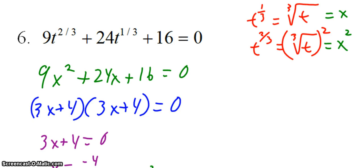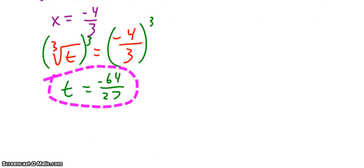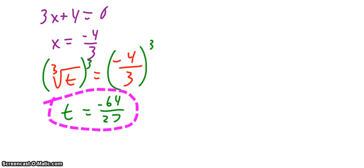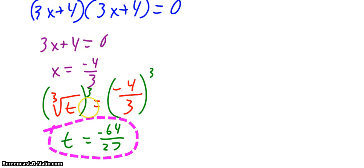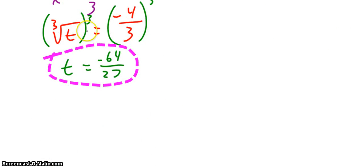I know that part one was finishing very quickly, so I kind of rushed through the explanation at the end, but hopefully you followed and understood. Once we solve for x, we substitute back in for x. x was the cube root of t, and so then I cube both sides. Do we have to check for extraneous solutions here? No, because we cubed both sides. If we had squared both sides, then we would have to check for extraneous solutions.